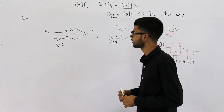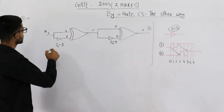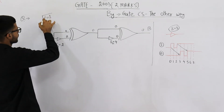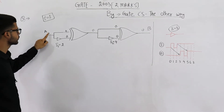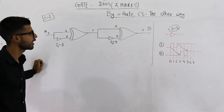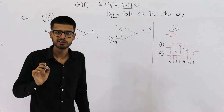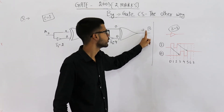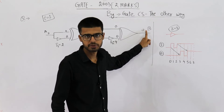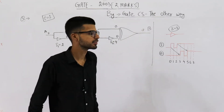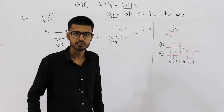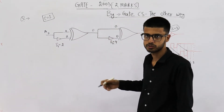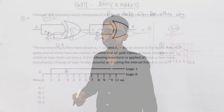Now, they say at time equal to one nanosecond the input is changed to A — that is, it goes high. The question is: from time equal to one to ten nanoseconds, how many times will the output B change? How many transitions will occur at B? You can pause the video to read the question.